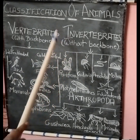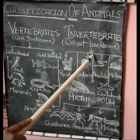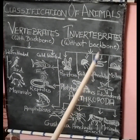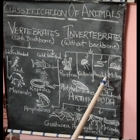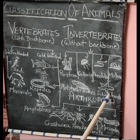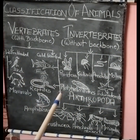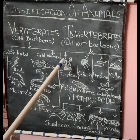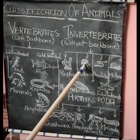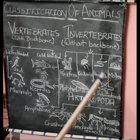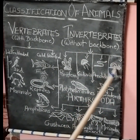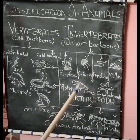Now coming to invertebrates. Invertebrates are divided into Phylum Porifera, Phylum Cnidaria, Phylum Annelida, Phylum Mollusca, Phylum Platyhelminthes, and Phylum Echinodermata. Porifera includes sponge; Cnidaria shows jellyfish; Annelida includes earthworm; Mollusca includes snail; Platyhelminthes shows planaria.